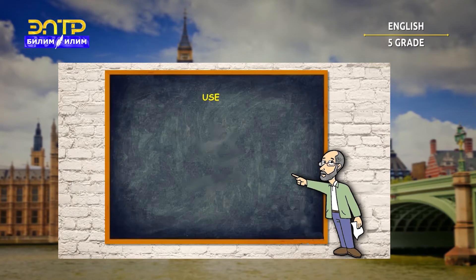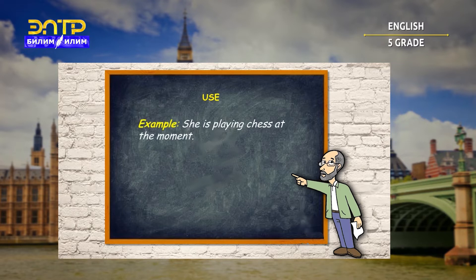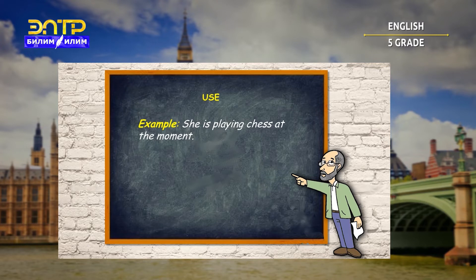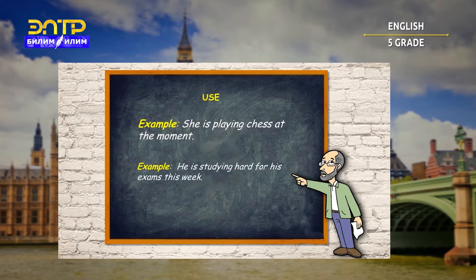We use the present continuous tense to talk about activities happening right now. For example, she is playing chess at the moment. We can also use the present continuous tense to talk about activities happening around now and not necessarily this very moment. For example, he is studying hard for his exams this week.